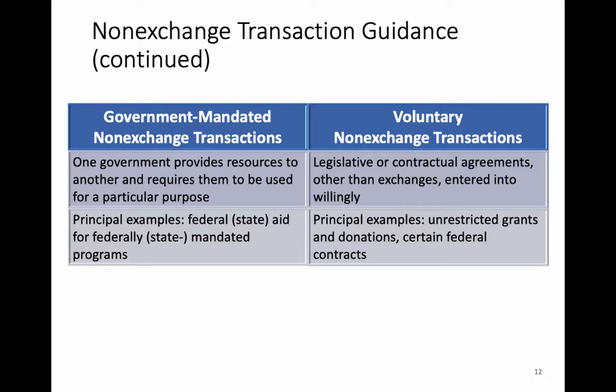For government-mandated non-exchange transactions, which tend to be expenditure-driven grants, a government spends money on an acceptable purpose under some grant program, files for reimbursement, and the grantor — usually the federal or state government — cuts them a check equal to the amount of allowable expenditures. Voluntary non-exchange transactions include unrestricted aid and some contractual agreements that governments may enter into, which you tend to see more in colleges, universities, and hospitals entering agreements to conduct research for a particular purpose.